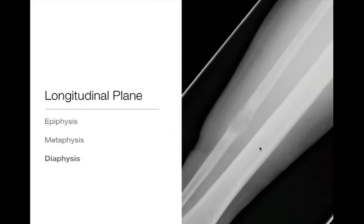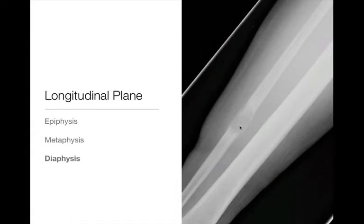Next up is the diaphysis. This is an example of a diaphyseal lesion: a geographic lytic lesion with a wide zone of transition and periosteal reaction, centered in the diaphysis of the fibula. Because of the wide zone of transition and periosteal reaction, we start worrying about more aggressive processes — and this was a metastatic lesion in this case.